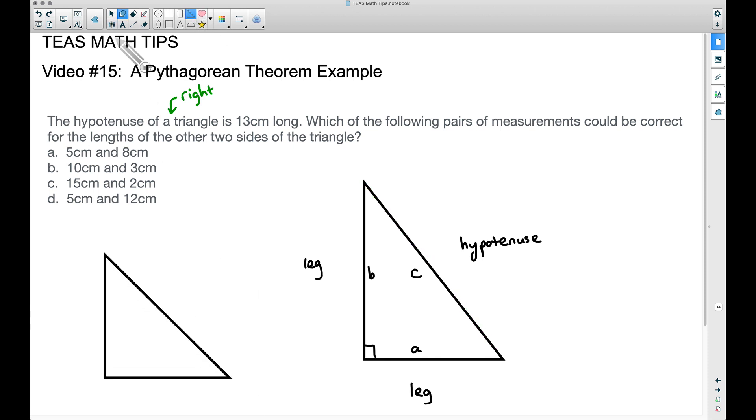To make sure you understand that before we do this example further, if I draw another right triangle and I start rotating it, the right angle is still right here. That's the 90 degree angle. These two sides are our legs. This side is the hypotenuse.